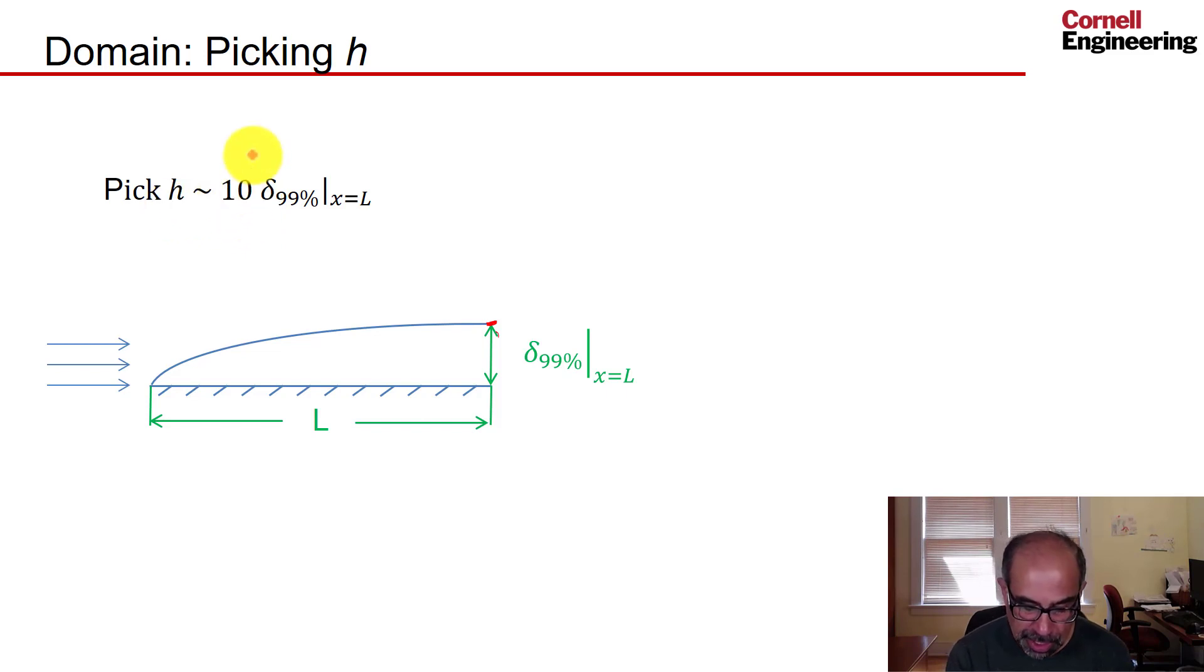And from boundary layer theory I have this expression for the boundary layer thickness, and it's inversely proportional to the square root of the Reynolds number.